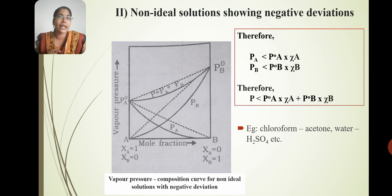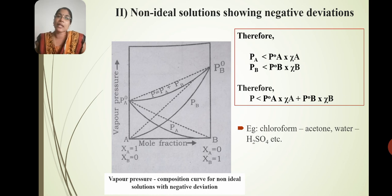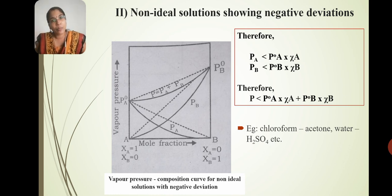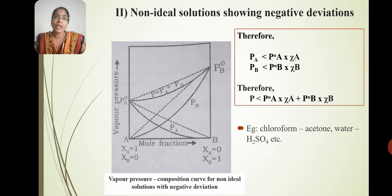Mathematically, we can represent negative deviation using less than symbols: PA less than P°A times chi-A, and PB less than P°B times chi-B. We can see this graphically using the greater than and less than symbols.